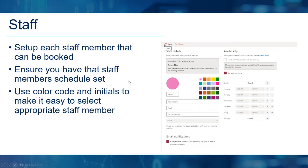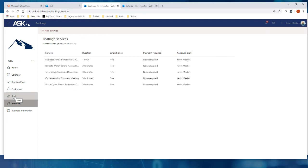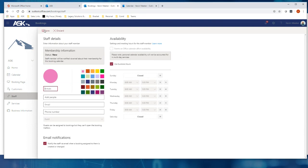Now we need to move on to Staff — it's great that we've got services created, but we need staff members there to provide whatever service is selected by your client. Each staff member needs a schedule set. You can use color codes and initials for easier navigation. Under the Staff section, you can see existing staff members. For personal use it's just yourself, but for a business you'd build out your full team.